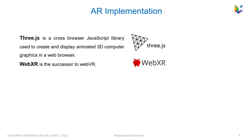The WebXR API's goal is to detect if AR capabilities are available, query the AR device capabilities, poll the AR device and associated input device state, and display imagery on the AR device at the appropriate frame rate.